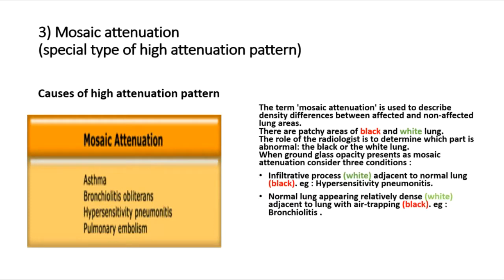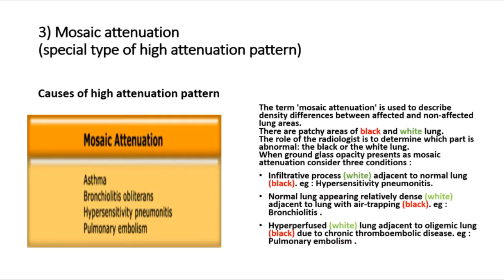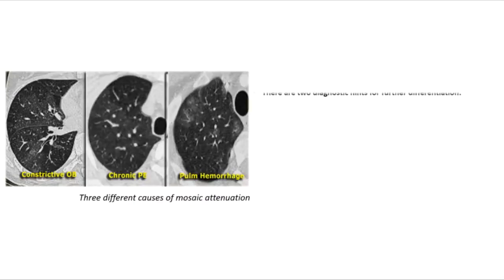Normal lung appearing relatively dense (white) adjacent to lung with air trapping (black), e.g., bronchiolitis; or hyperperfused white lung adjacent to oligemic black lung due to chronic thromboembolic disease, e.g., pulmonary embolism.